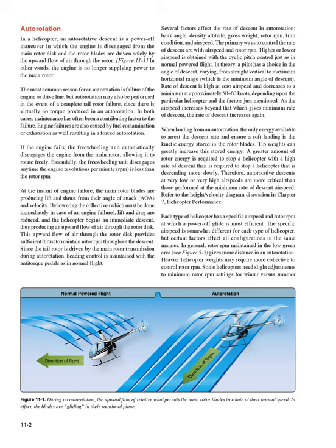By lowering the collective, which must be done immediately in case of an engine failure, lift and drag are reduced, and the helicopter begins an immediate descent, producing an upward flow of air through the rotor disc. This upward flow provides sufficient thrust to maintain rotor RPM throughout the descent. Since the tail rotor is driven by the main rotor transmission during autorotation, heading control is maintained with the anti-torque pedals as in normal flight.